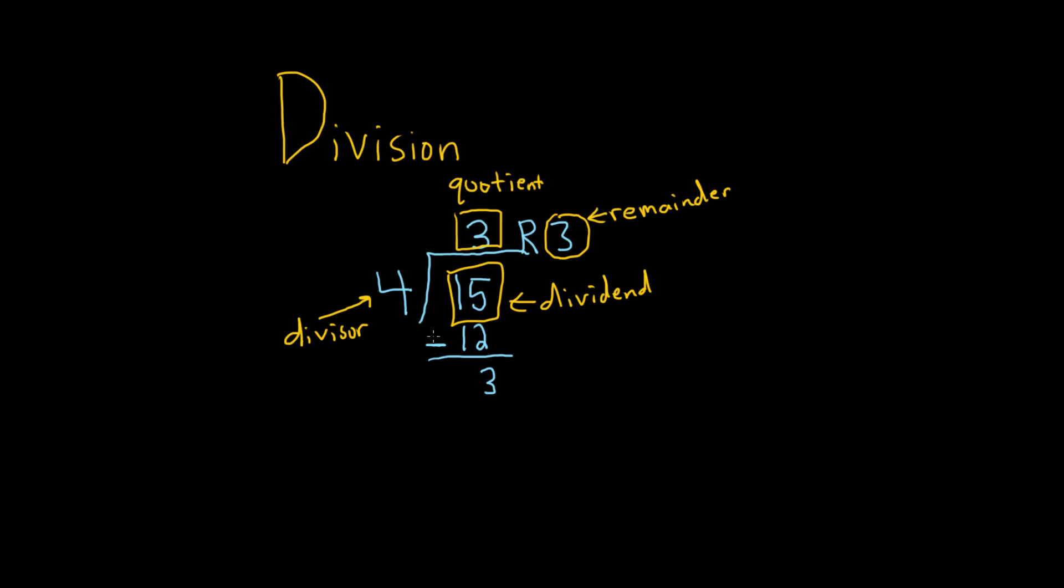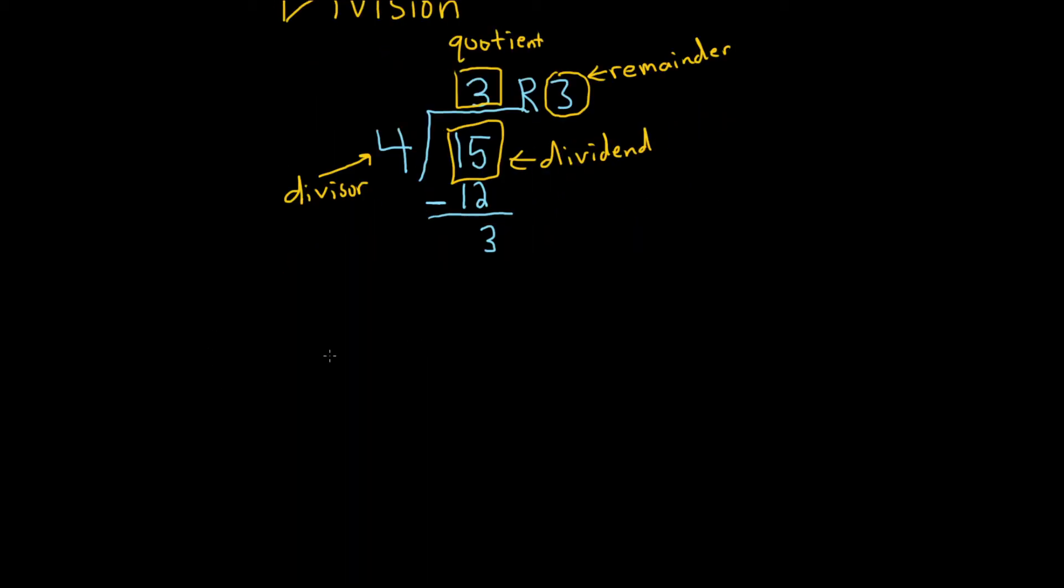Let's do one more example where it's a little bit more challenging. So, let's take 23 and divide that into 687. Another way to read this is we're taking 687 and we're dividing it by 23. Okay, so then you look at the 6 and you ask yourself, hey, can 23 go into 6? No, it can't.